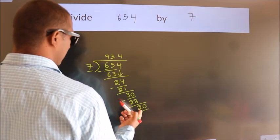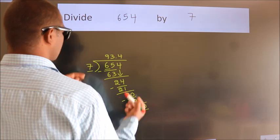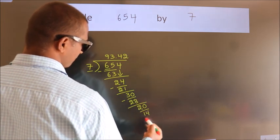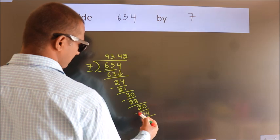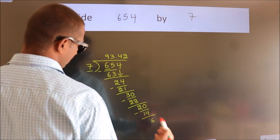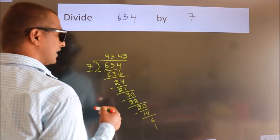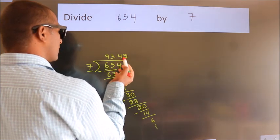A number close to 20 in 7 table is 7 twos, 14. Now we subtract. We get 6. And the division continues. It is enough if we do up to 2 decimal places.